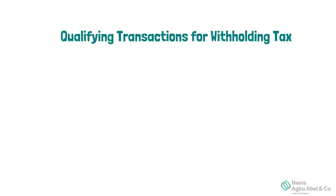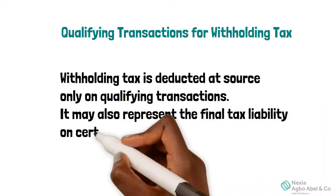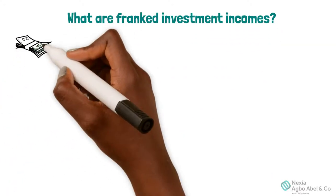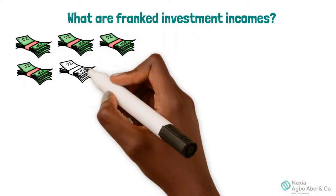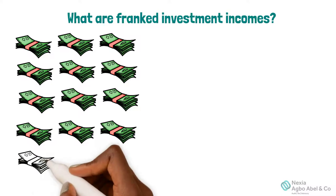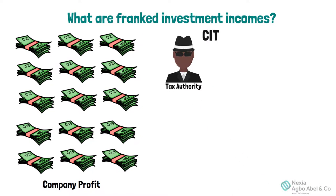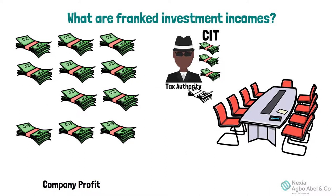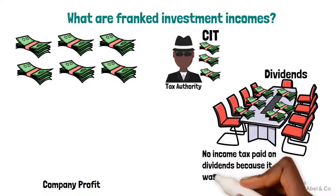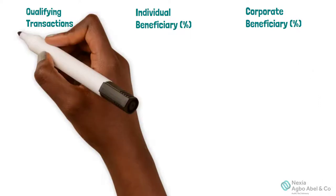Qualifying Transactions for Withholding Tax. Withholding Tax is deducted at source only on qualifying transactions. It may also represent the final tax liability on certain Franked Investment Incomes. Franked Investment Incomes are incomes on which tax has already been paid, usually deducted at source, and are thus exempted from additional tax by the investor. Dividends and income on unit trusts are common examples. For instance, a company pays income tax on profit, then distributes a percentage as dividend to shareholders — this dividend is no longer taxed because tax was already deducted at source. The following are qualifying transactions on which withholding tax is deducted using appropriate rates for individual and corporate beneficiaries.